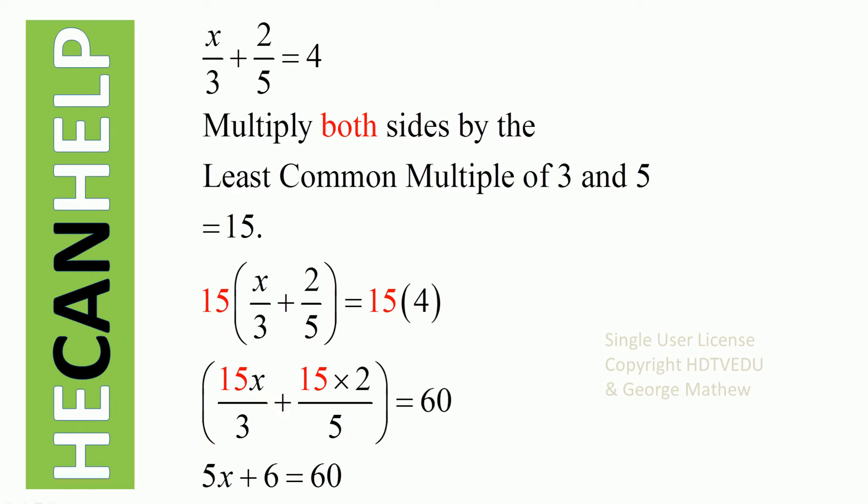When we multiply the left and right sides by 15, what do we get? We distribute the 15 to x over 3 and 15 to 2 over 5. So, 15 times x over 3 and then 15 times 2 over 5.